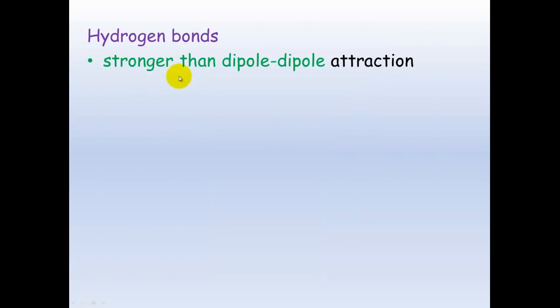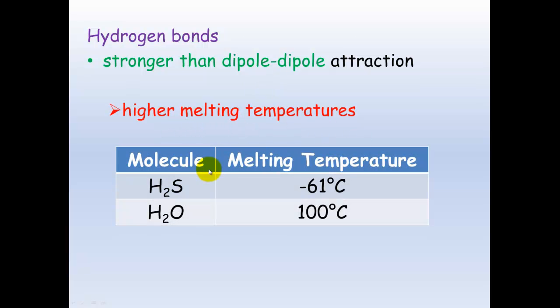So hydrogen bonds are stronger than normal dipole-dipole attractions, and this means higher melting temperatures. And if we have a look at two different molecules here, we've got water, which melts at 100 degrees Celsius, and water of course has hydrogen bonds. And we've got hydrogen sulfide, which doesn't have hydrogen bonds, and you can see here it's got a much lower melting temperature.